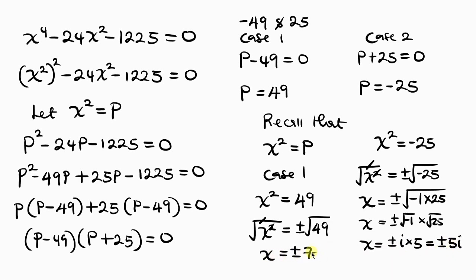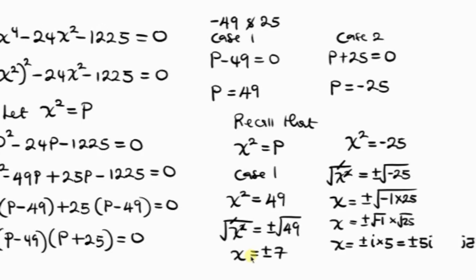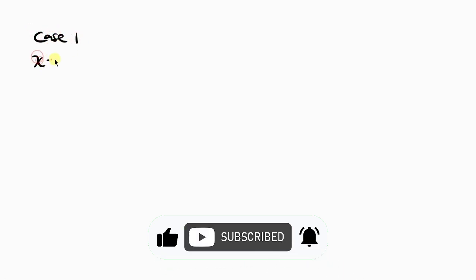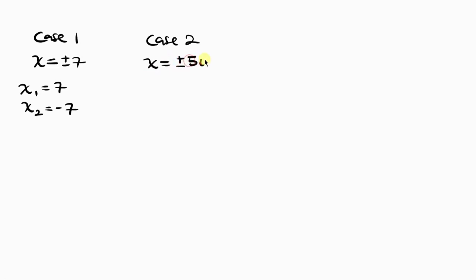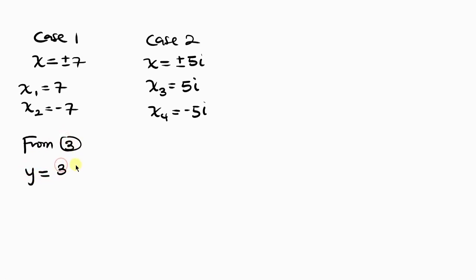Let's summarize the x values: for case 1, x equals plus or minus 7, meaning x₁ equals 7 and x₂ equals negative 7. For case 2, we have complex solutions x equals plus or minus 5i, meaning x₃ equals 5i and x₄ equals negative 5i. Now let's find the corresponding y values. Recall from equation 3 that y equals 35 over x.